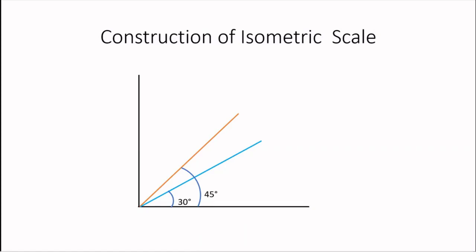On the line inclined at 45 degrees, I take divisions. These divisions are 1 cm apart and represent the true length.